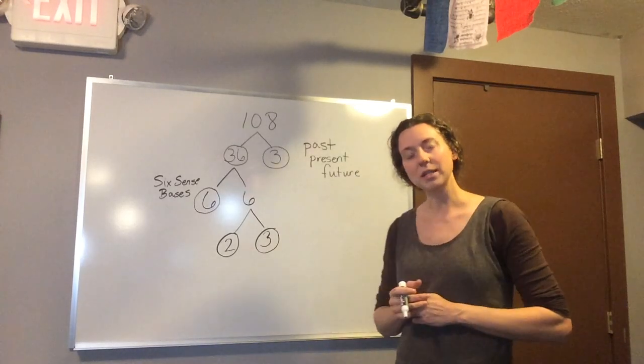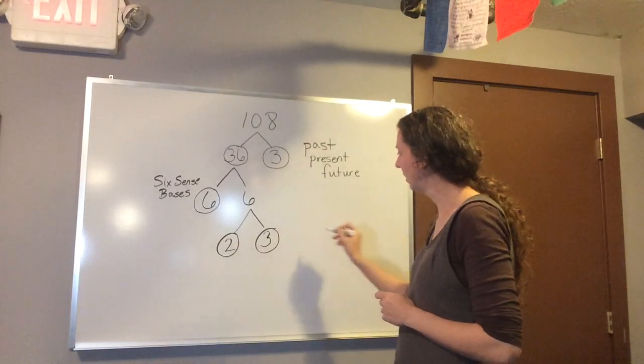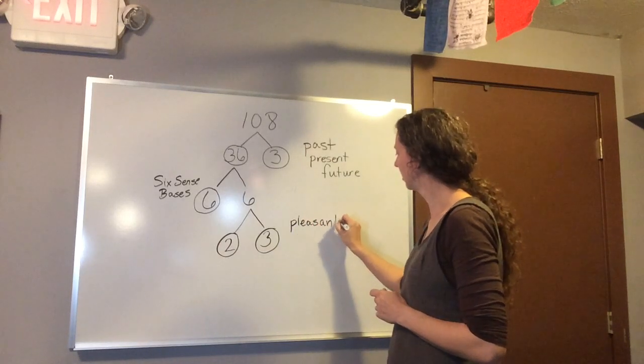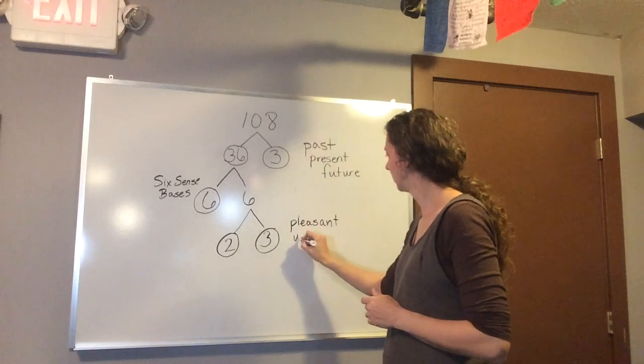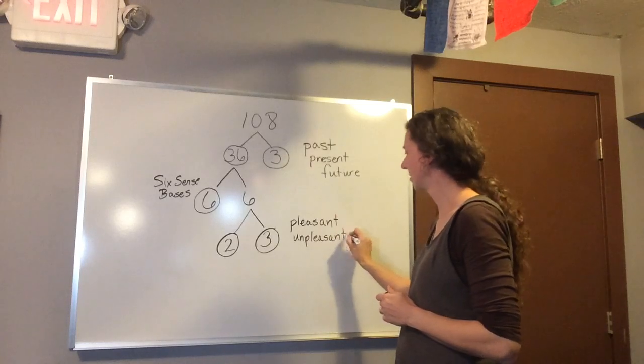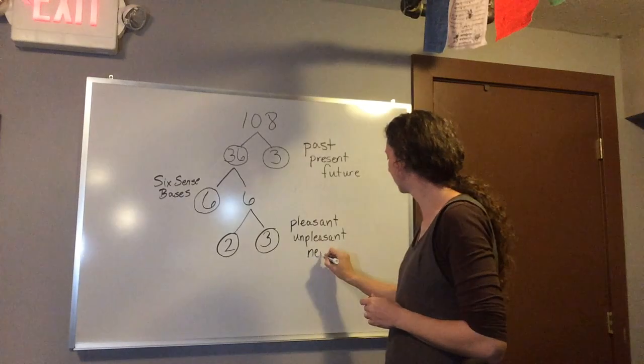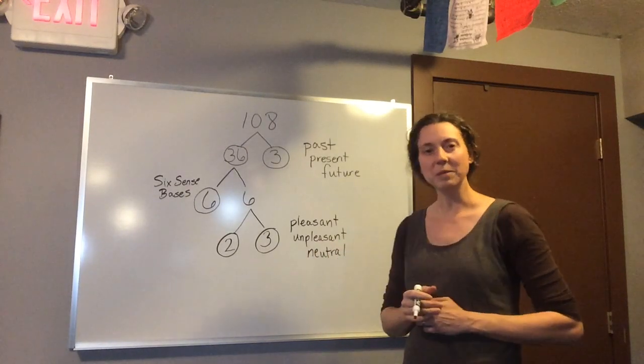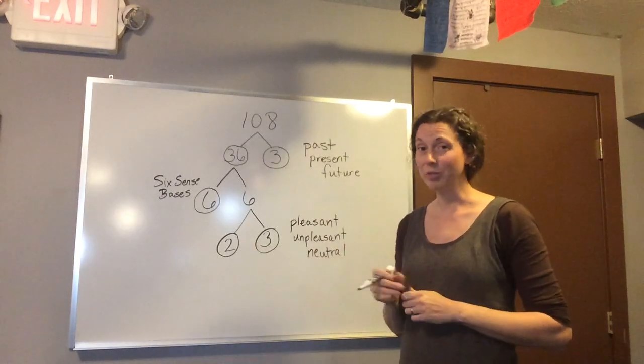There are 3 different types of feelings that we can have. They are pleasant feelings, unpleasant feelings, or sometimes we have feelings that aren't really pleasant or unpleasant, and so we call them neutral.